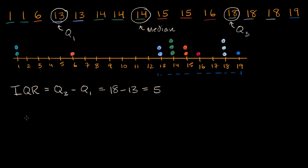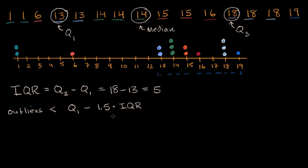To figure out outliers: outliers are going to be less than Q1 minus 1.5 times the interquartile range. This isn't some rule of the universe — it's something statisticians have agreed on to give a better definition for outliers. Or an outlier could be greater than Q3 plus 1.5 times the interquartile range. One could argue it should be 1.6, or 1, or 2, but this is what people have tended to agree on.